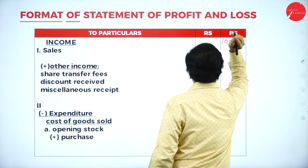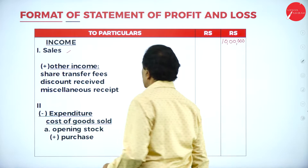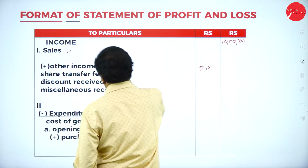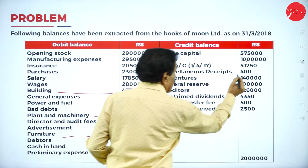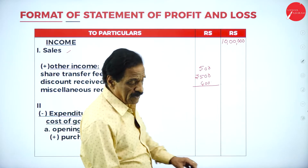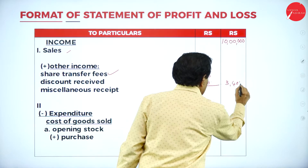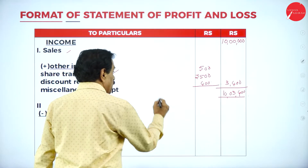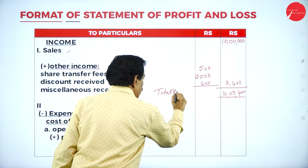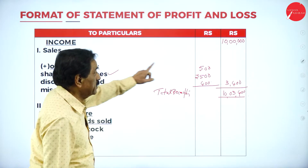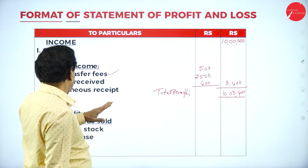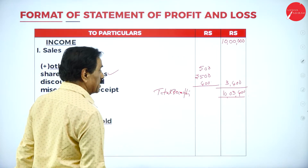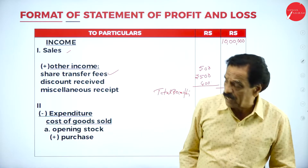The first item in the statement of profit and loss is sales: ₹10 lakh. Other income: share transfer fees ₹500, discount received ₹2,500, miscellaneous receipt ₹400. Total other income is ₹3,400. So total receipts become ₹10,03,400.